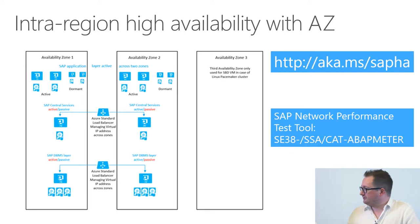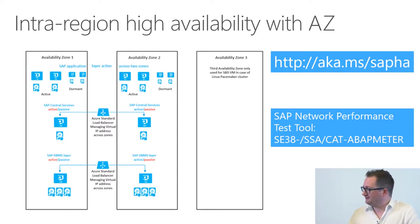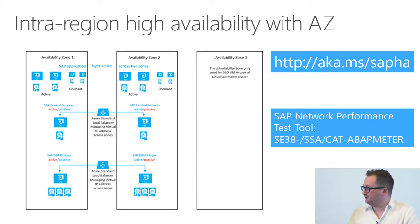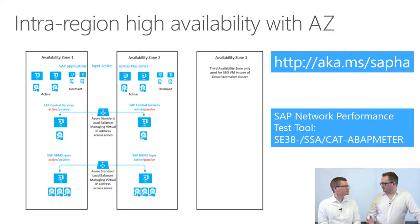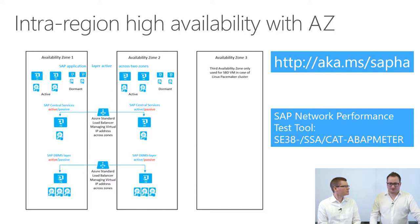Worth mentioning: the replication of data at the database layer is done by the database technology itself. If we're using HANA, we use HSR; for SQL Server, Always On. By default, it's better if the whole system runs in the same availability zone — application server and DBMS server in the same zone. But if there's a cluster failure, it is totally supported to have the application server in zone one using the DBMS in zone two.